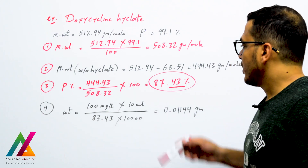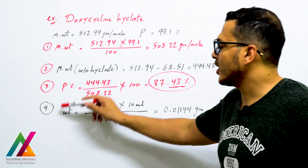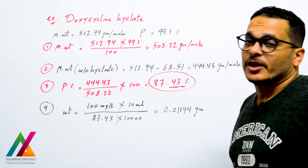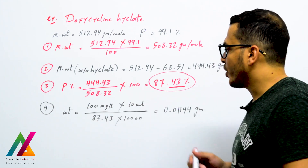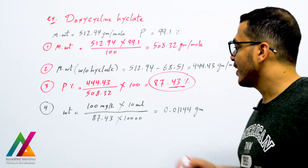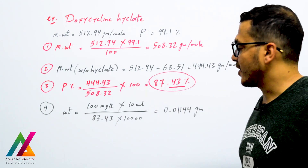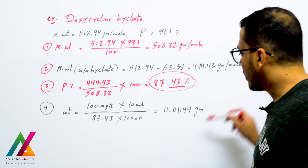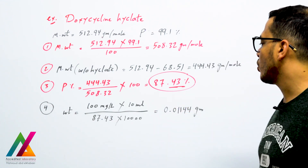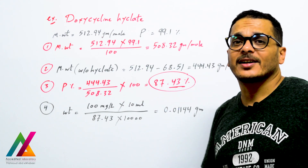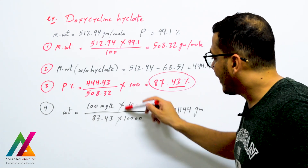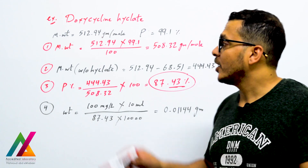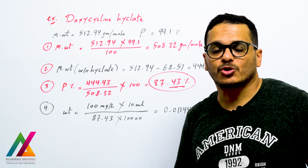Then use this exact purity to calculate the weight you will add from the powder standard. For example, to prepare 100 mg/L in a 10 ml flask: Weight = (100 × 10) / (87.43 × 10,000) = 0.1144 g. So you will dissolve 0.1144 g of this standard in 10 ml to get a 100 ppm stock solution concentration.